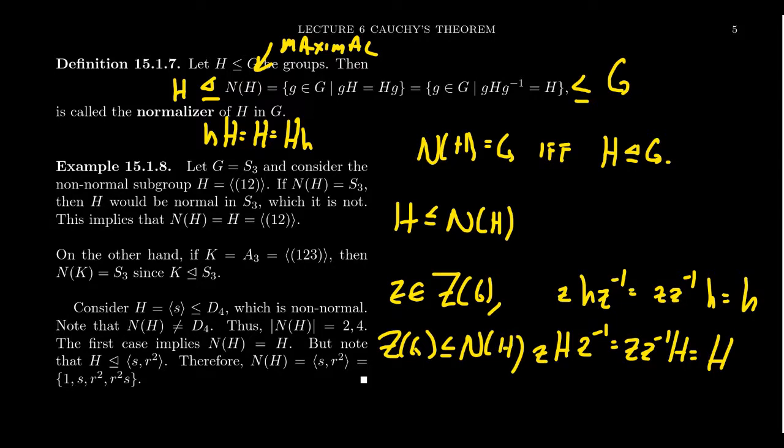So this tells us that the center is always a subgroup of the normalizer as well. So these are some important observations on normalizers. The normalizer of a subgroup always contains the subgroup. It also always contains the center of the group. There could be other things in there as well, but those are two subgroups that are guaranteed to be inside of a normalizer.